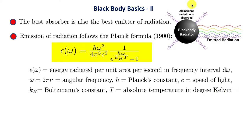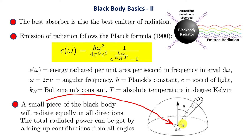Consider a small area element dA on the surface of this blackbody, making an angle θ with the normal to the surface, subtending a small solid angle dΩ. This infinitesimal piece of the blackbody radiates equally in all directions, so to find the total power radiated by that small area you must integrate over all solid angles.